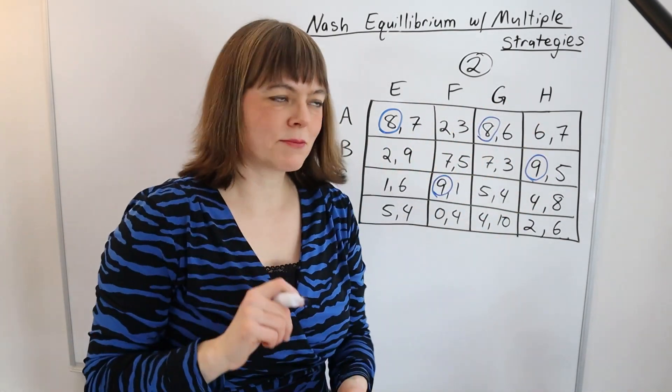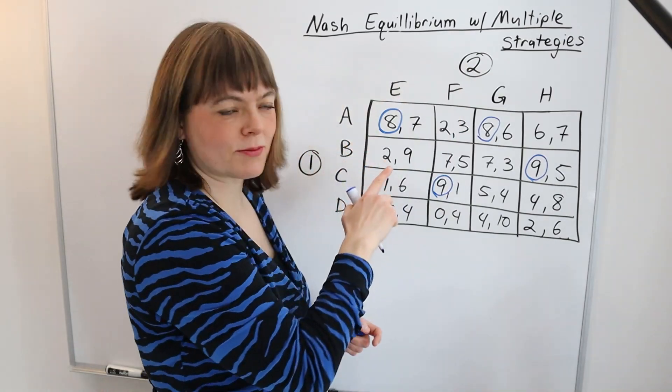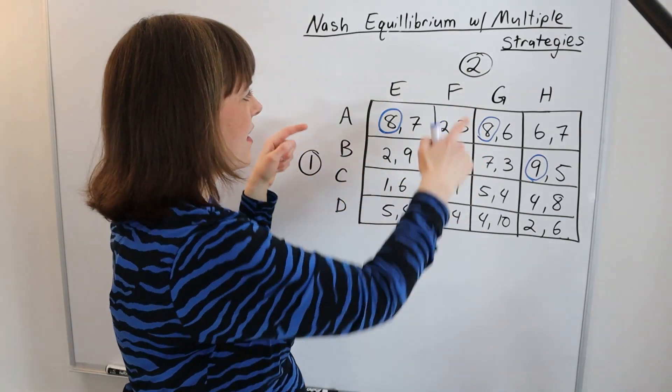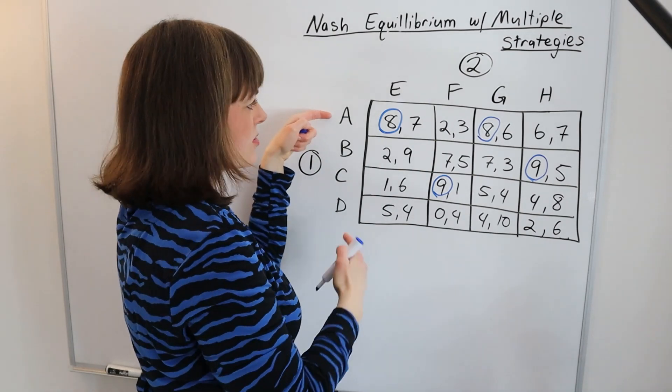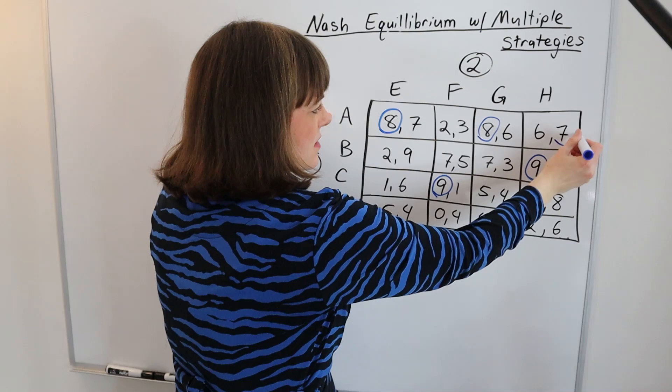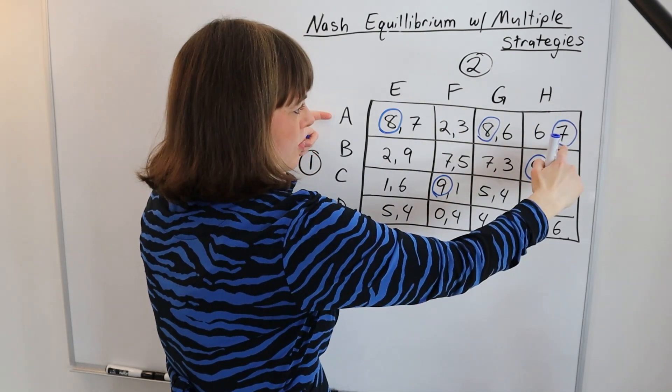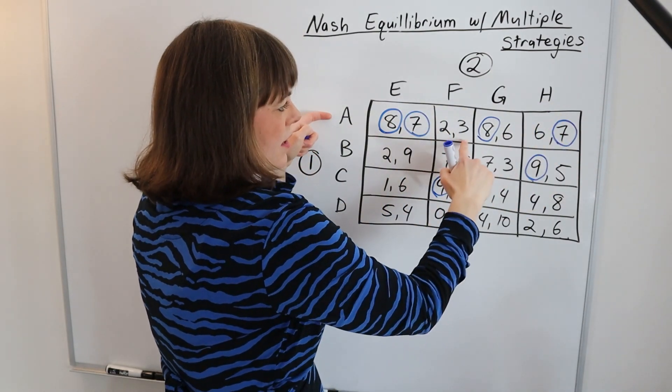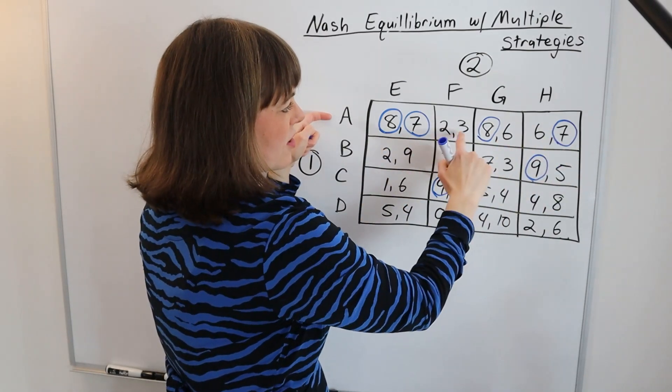Then we flip perspectives and think from player two's perspective. Player two is going to say, if the other player chooses A, what will I prefer to have done? Player two is neutral between this seven and this seven, but definitely prefers the sevens over the sixes.